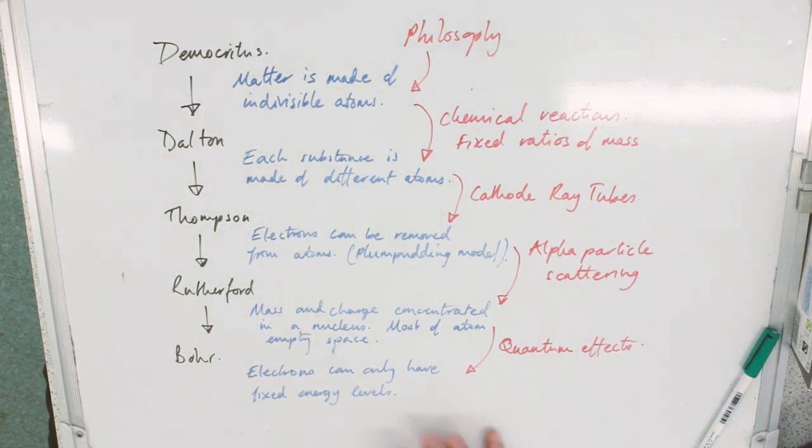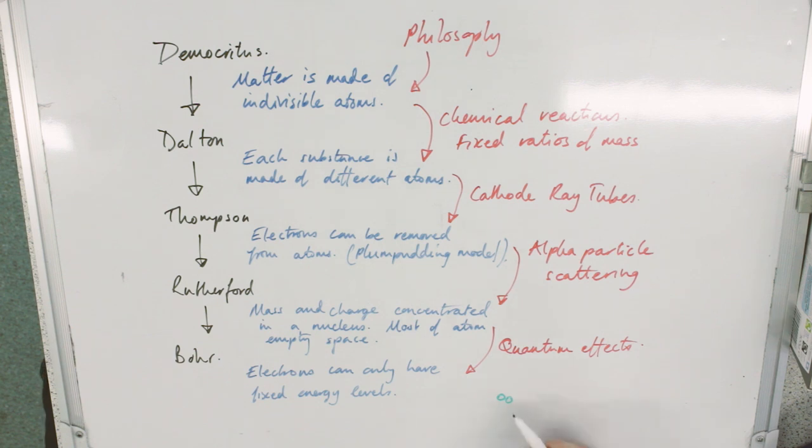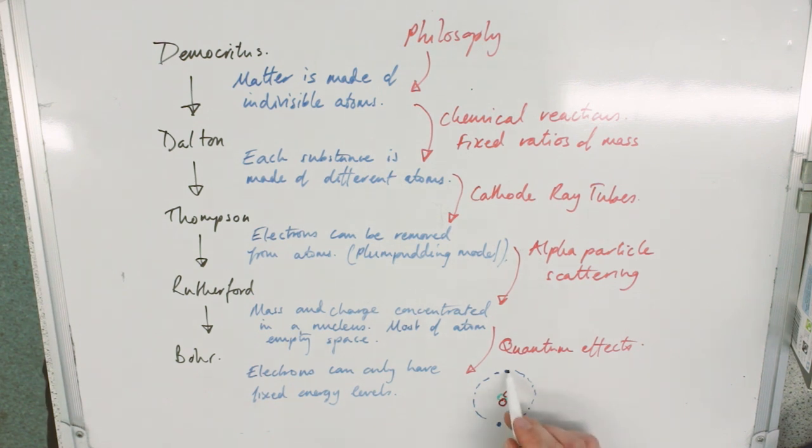This model is the model that we have today, a lovely neat model with neutrons, I'll draw neutrons green, protons, red, because red is usually positive, and electrons orbiting in this, the first energy level, the first shell. Well, this would, of course, be an atom of helium.